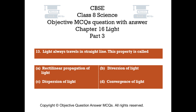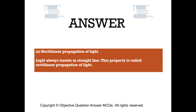Question number 13: Light always travels in straight line. This property is called — Option A: Rectilinear propagation of light, Option B: Diversion of light, Option C: Dispersion of light, Option D: Convergence of light. The right answer is Option A: Rectilinear propagation of light. Light always travels in a straight line; this property is called rectilinear propagation of light.